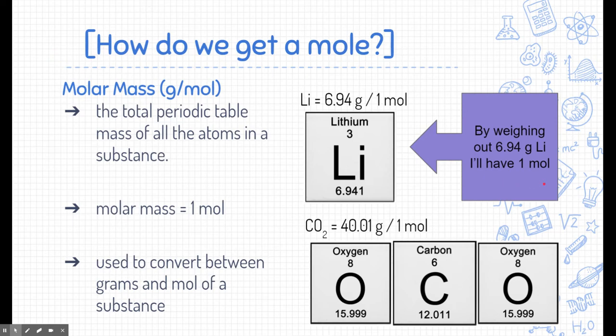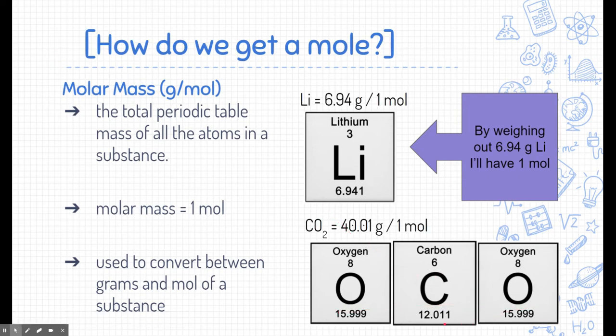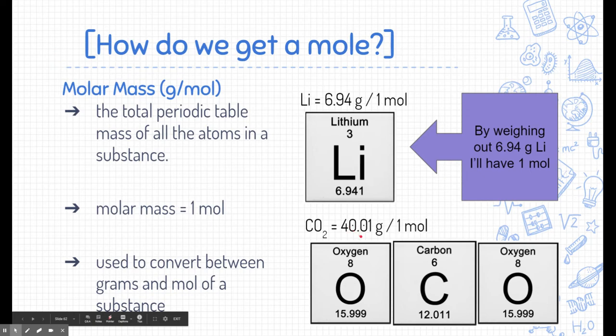We could do the same thing with a compound. Below here is carbon dioxide, which is made of one carbon and two oxygens. If you add up all of the atomic masses of those elements, you get the atomic mass of carbon dioxide. If we change that atomic mass to grams and weigh 44.01 grams of carbon dioxide, we would have one mole of it. So it's a really convenient transition — just use the atomic masses on the periodic table to represent the molar masses of substances.